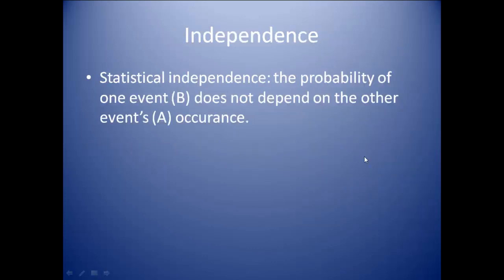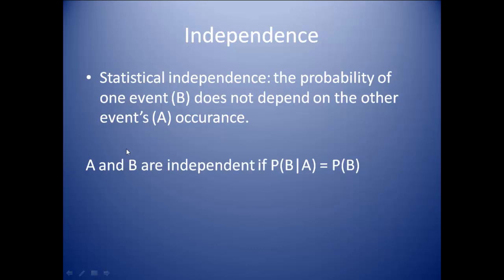Now, independence. Statistically, independence is different than what you might think. For statistics, it means the probability of one event does not depend on the other event occurring — they are independent of each other. Mathematically, if A and B are independent, the probability of B given that A has already happened will be no different than just the regular probability of B. Knowing that A happened does not influence B.